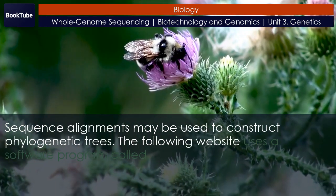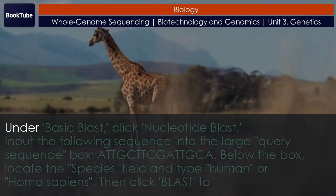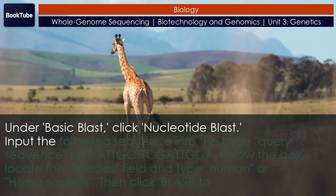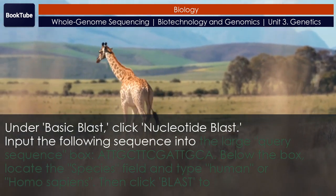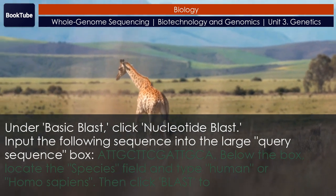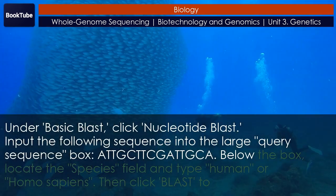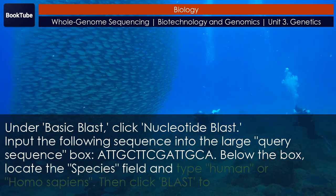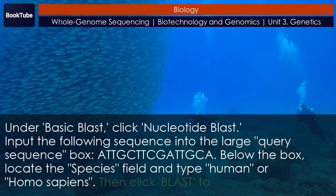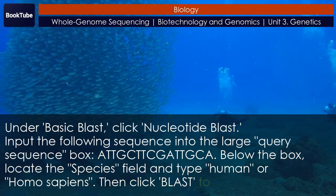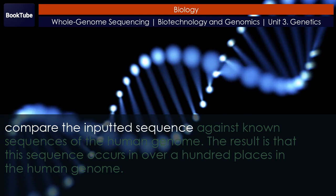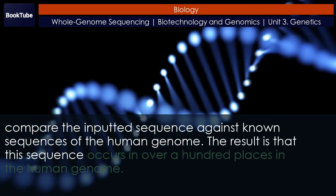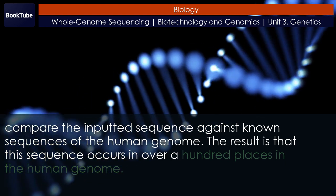The following website uses a software program called BLAST. Under Basic BLAST, click Nucleotide BLAST. Input the following sequence into the large Query Sequence box: ATTGCTTCGATTGCA. Below the box, locate the Species field and type Human or Homo sapiens, then click BLAST to compare the inputted sequence against known sequences of the human genome. The result is that this sequence occurs in over a hundred places in the human genome.